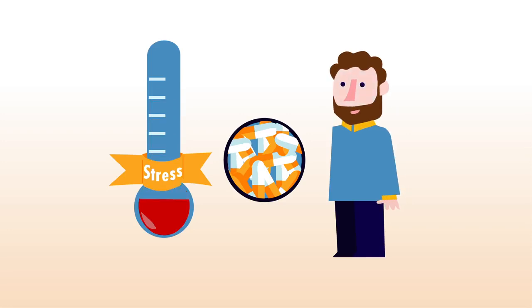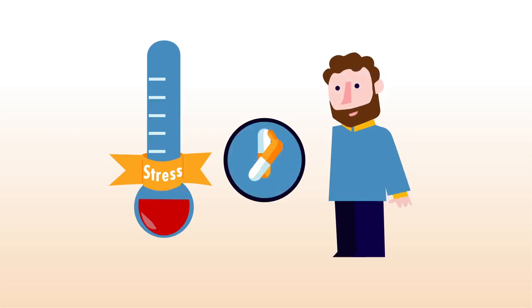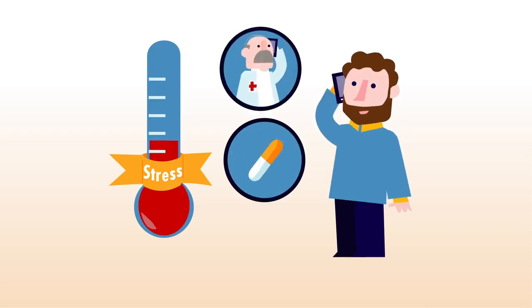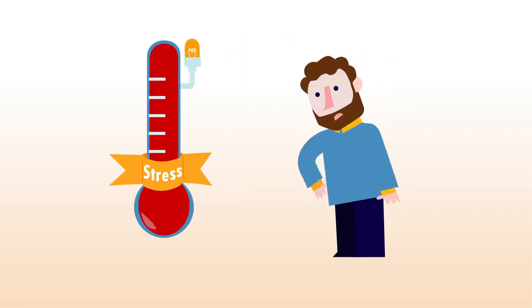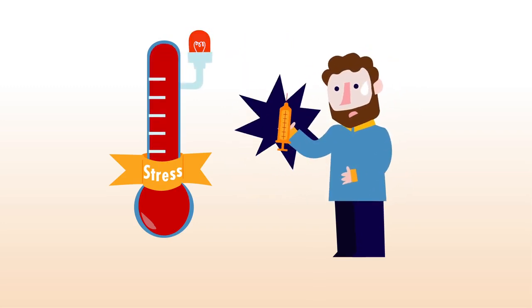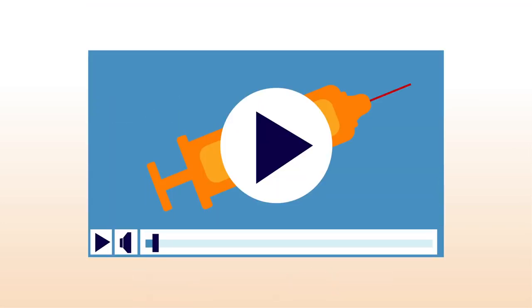Once you're feeling better, go back to your normal dosage. And if you have any doubts, call your doctor. If you can't prevent an Addison Crisis, you will need to have an emergency injection. Watch the emergency injection animation to see how.